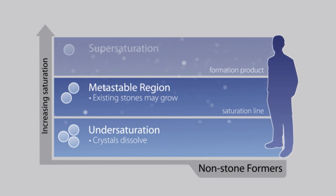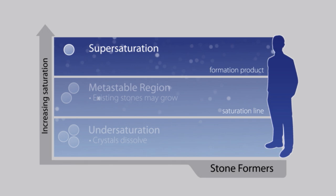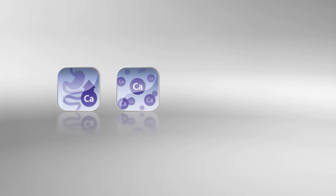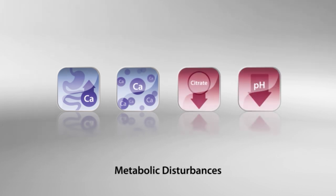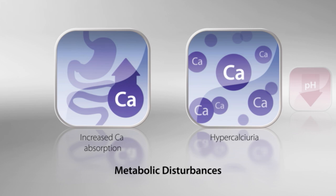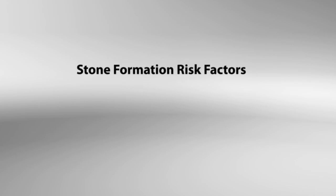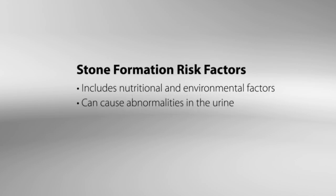In normal patients, their urine is not as saturated, and they have sufficient quantities of inhibitors present. But the urine of patients with kidney stones is more saturated, and it may also lack inhibitors that increase the propensity for crystallization of stone-forming salts. There are two reasons for this. First, stone-formers are known to suffer from a variety of metabolic disturbances that increase the amount of stone-forming substances excreted in the urine, and also decrease the excretion of inhibitors. Second, a number of common nutritional and environmental factors can cause abnormalities in the urine, and may also exaggerate underlying abnormalities due to metabolic disturbances.